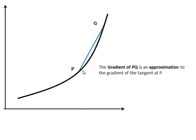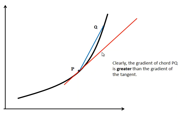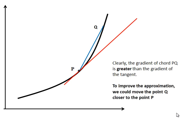Now, the gradient of PQ is an approximation to the gradient of the tangent at P. Here's the tangent. Clearly, the gradient of the chord PQ is greater than the gradient of the tangent. So, we ask now, how can we make the approximation better?